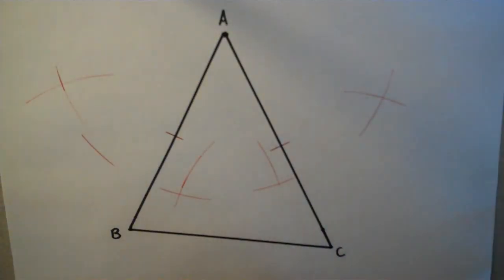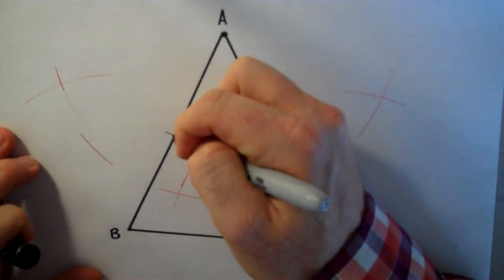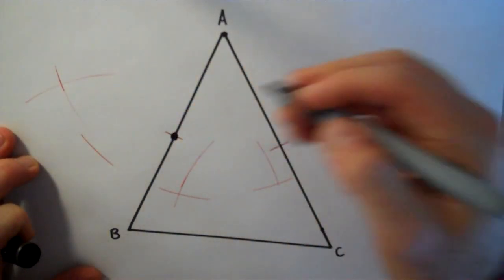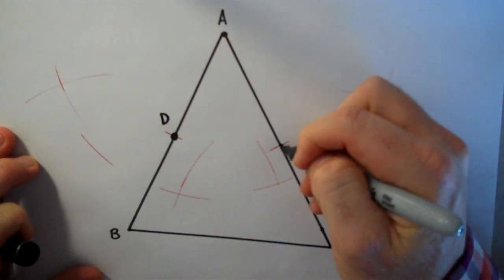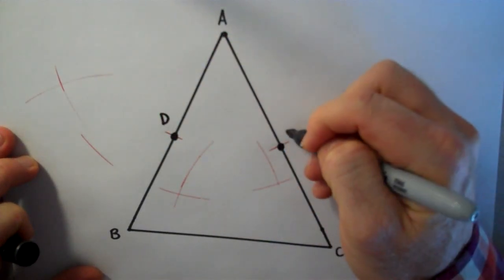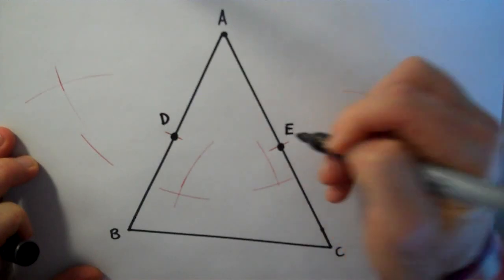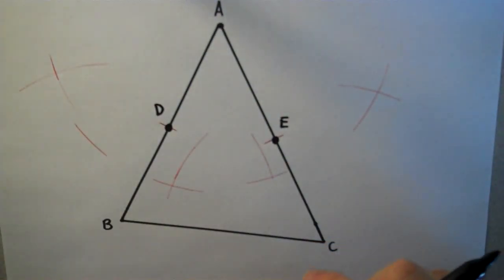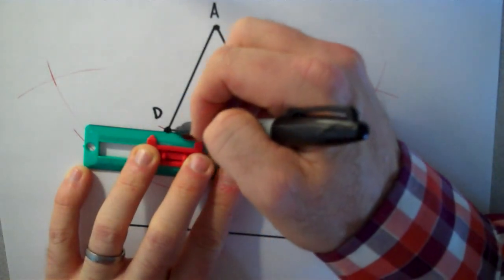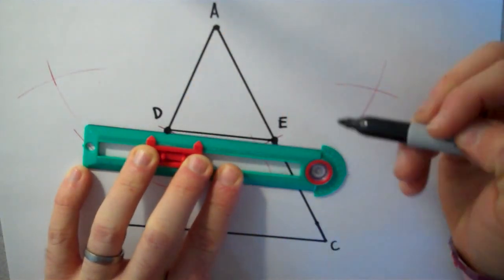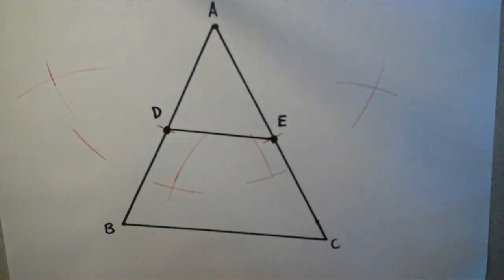So what I have constructed here is I have constructed the midpoint of AB, which I'll call D, and I've constructed the midpoint of AC, which I will call E. And if I connect those two midpoints, then I have a mid-segment.